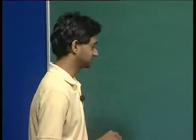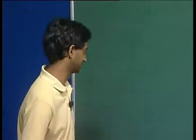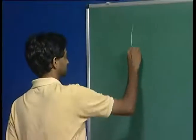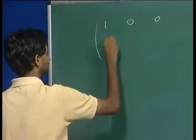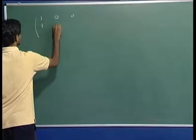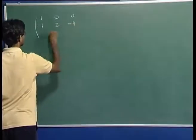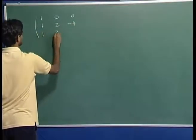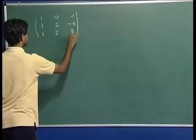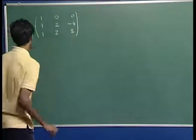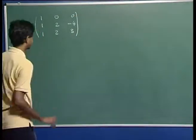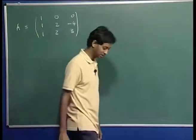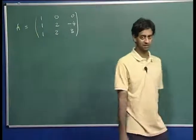Let us look at an example of calculating the eigenvalues and eigenvectors of a matrix. Let us say you are given the matrix A equal to [1, 0, 0; 1, 2, -4; 1, 2, 3]. Let us see how we will calculate the eigenvalues and eigenvectors.